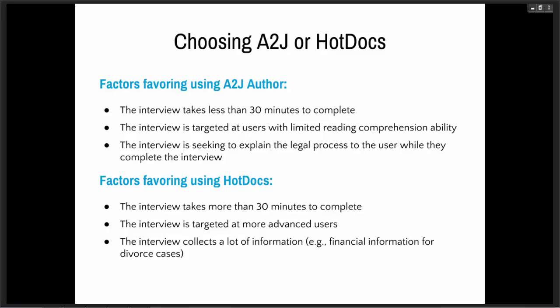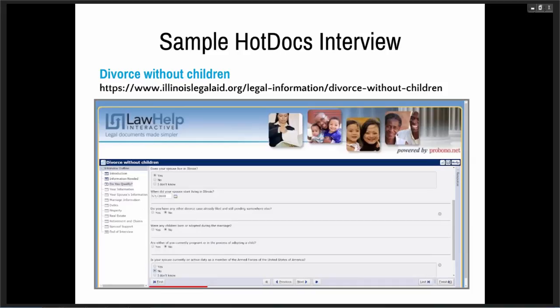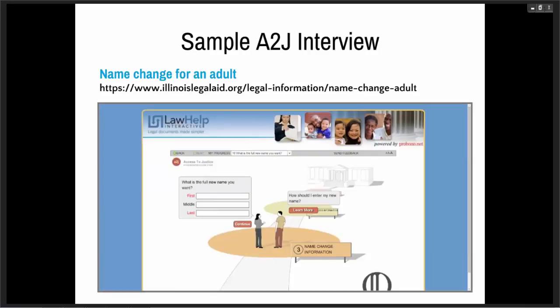And if the interview is going to collect a lot of information, like financial information, Hot Docs is what I prefer to use. I do have a sample of a Hot Docs interview here — it's got the dialogues on the left-hand side, and each dialogue contains a set of questions, so they're going through multiple questions in each dialogue. Whereas in A to J Author, they're seeing one question at a time, with learn more windows and pop-ups — all sorts of help text. So it does help break things out more for the less sophisticated users.